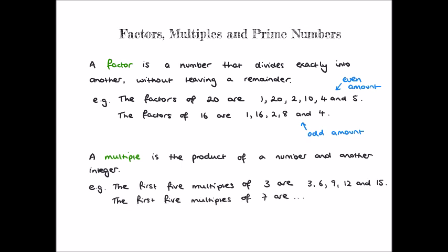Now pause the video and list the first 5 multiples of 7. Hopefully you spotted there the first 5 numbers in the 7 times tables. That's 7, 14, 21, 28, and finally 35.